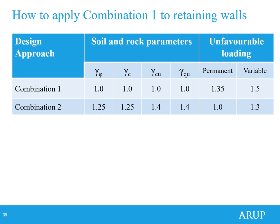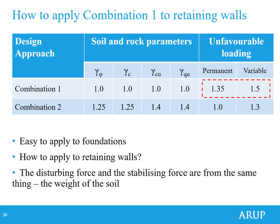These are the partial factors: in Combination 1 all the factors on soil and rock parameters are unity, and you apply a factor of 1.35 to permanent loads and 1.5 on variable loads. When EC7 came out initially, people found it extremely difficult to understand how to apply partial factors to loading on a wall — because the same soil pushing the wall on the active side is probably the same soil resisting it on the passive side. Should you apply 1.35 to unit weights of soil on the back? If you also apply 1.35 to the passive side, that's non-conservative. This created quite a lot of confusion at the beginning.